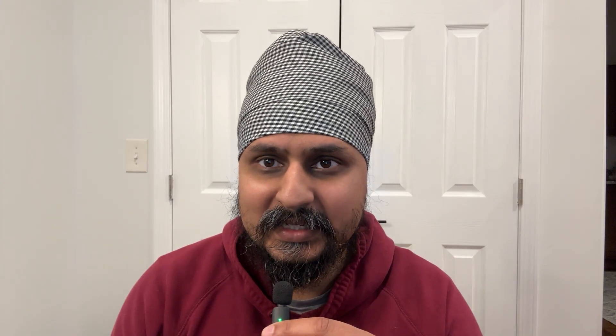First, let's talk about HDR 10 and HDR 10 Plus. HDR 10 is the baseline, most widely adopted HDR format — think of it as a foundation. It gives you a wider range of color and contrast over standard dynamic range, but it uses something called static metadata. That means the picture settings are set once for the entire movie or show, so if you have a scene that's super bright followed by a really dark scene, the TV is trying to apply the same settings to both.